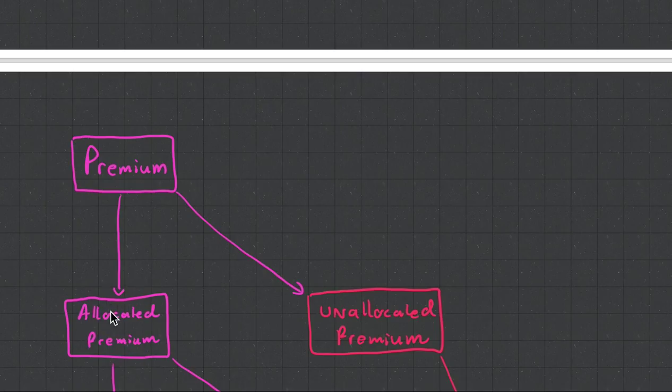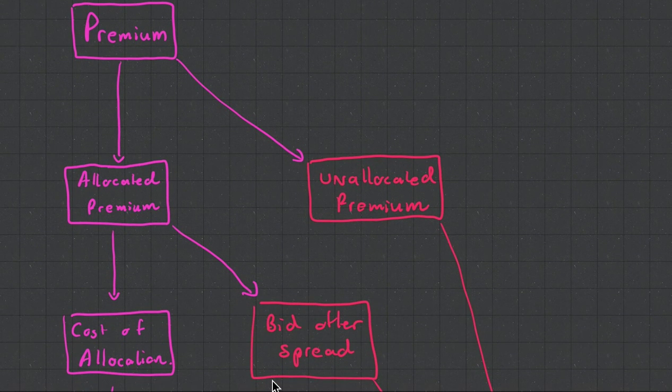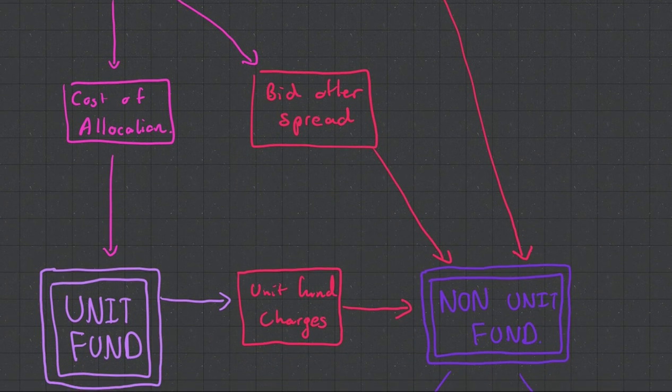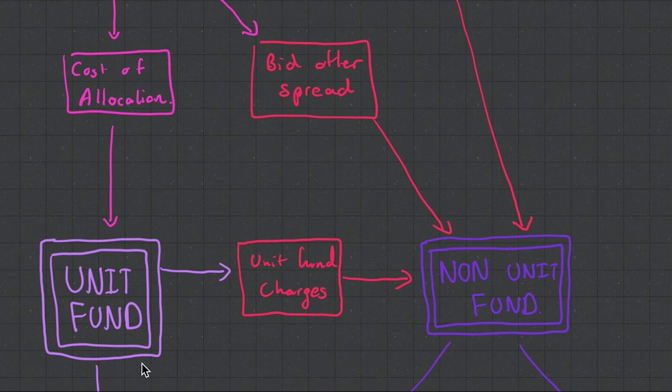With your allocated amount, it then goes into something else that cuts it up some more, and that's what we call the bid offer spread. So when you want to buy a unit, it might cost you 105%, and when you come to sell it, it'll be 95%. This difference between the bid and the offer is known as the spread, and again, it's another source of profit for the company. Once you've gone through that, you can use that to purchase units in the unit fund.